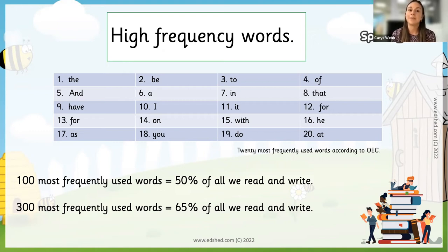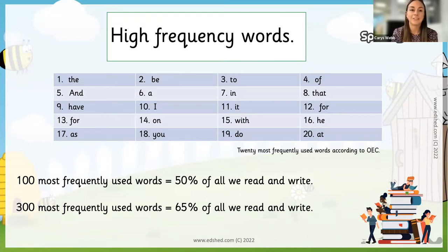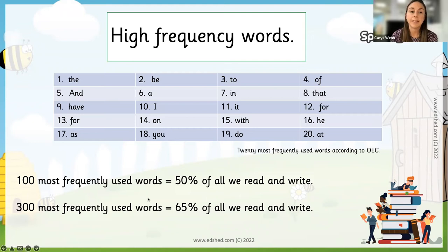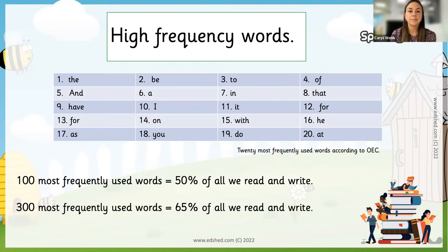The 100 most frequently used words appear in 50% of everything that we read and write. The 300 most frequently used words are in 65% of all that we read and write. That's why it's so crucial that we teach many of them very early on, as they pop up in so many books and children need to be able to use them to string sentences together.